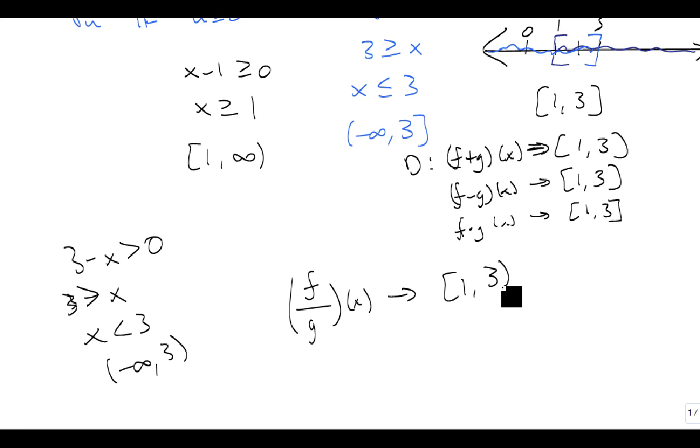This one's a parenthesis because the g being on the bottom takes priority to the square root. That's how we find our domain. Find the individual pieces, and then find their intersection.